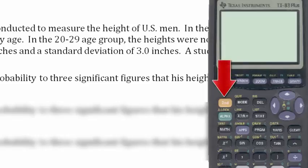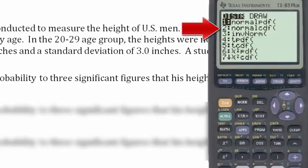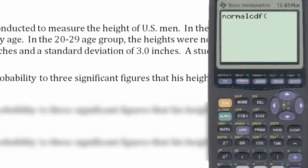Which you can get to by using the yellow second key, the distribution button, and selecting number 2, the normal cumulative density function.